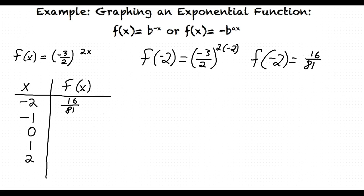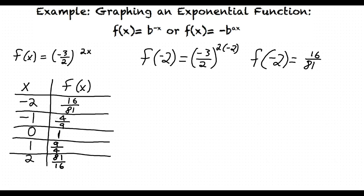Here's a sample calculation where we substituted negative 2 for x, resulting in f of negative 2 equals negative 3 halves raised to the negative 4th. Therefore, f of negative 2 equals 16 over 81. Repeat this process for the rest of the x values to generate the ordered pairs, then write the x and corresponding y values as ordered pairs.